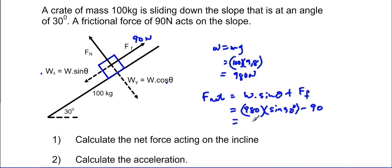And if you work on 980 times sine 30 degrees, we get 490 newtons minus the 90 which is acting in the opposite direction. And we see that 490 minus 90 will give us 400 newtons as our net force acting on the incline.